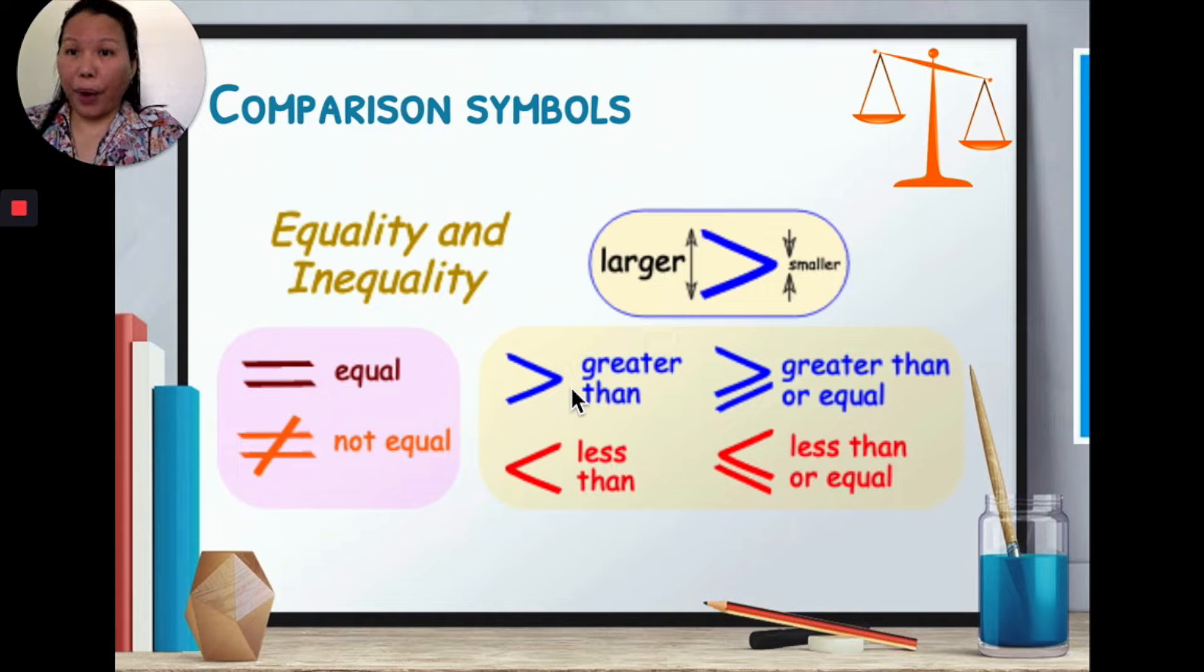Then we also have greater, less than, greater than or equal to and when we have greater or equal we also have the dash underneath the greater than. Less than or equal to we also have a little dash to show under the less than symbol.